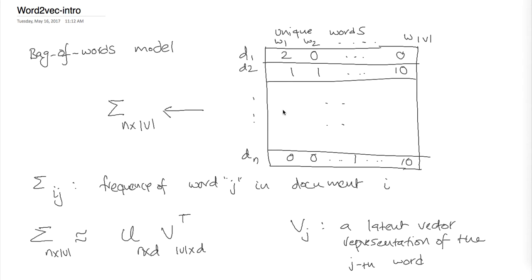This term-frequency representation doesn't consider semantics. For example, 'Obama greets the press' and 'Obama spoke with the journalist' are semantically very similar sentences, but there is very little word overlap between them. Since the term-frequency representation considers document similarity in terms of word overlap, it doesn't capture the semantic similarity between them.